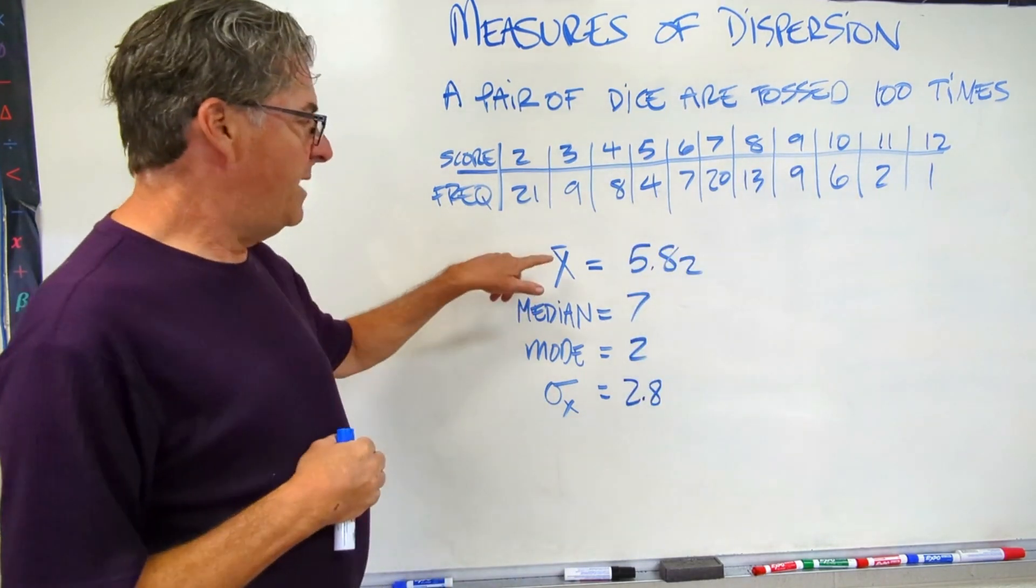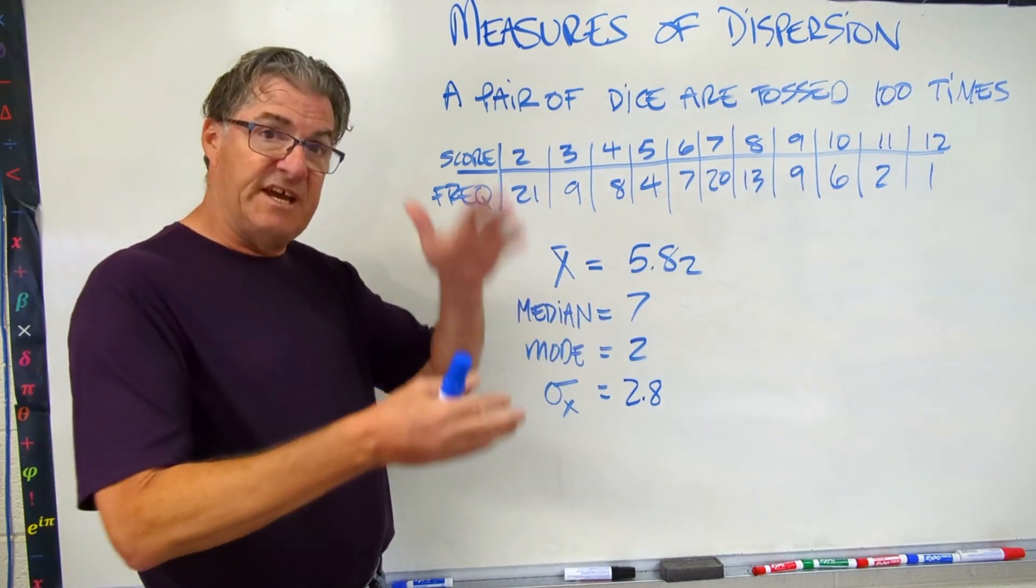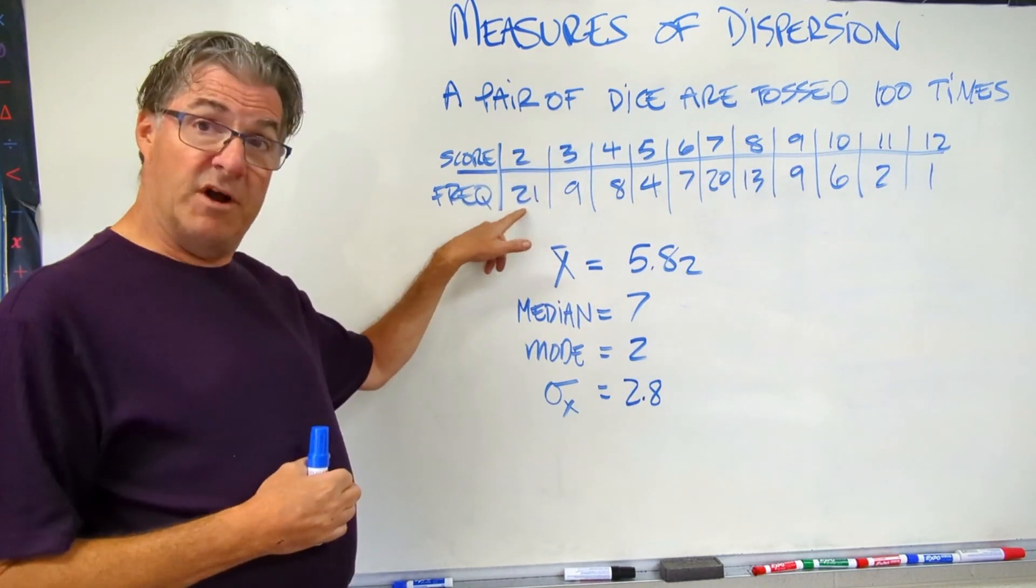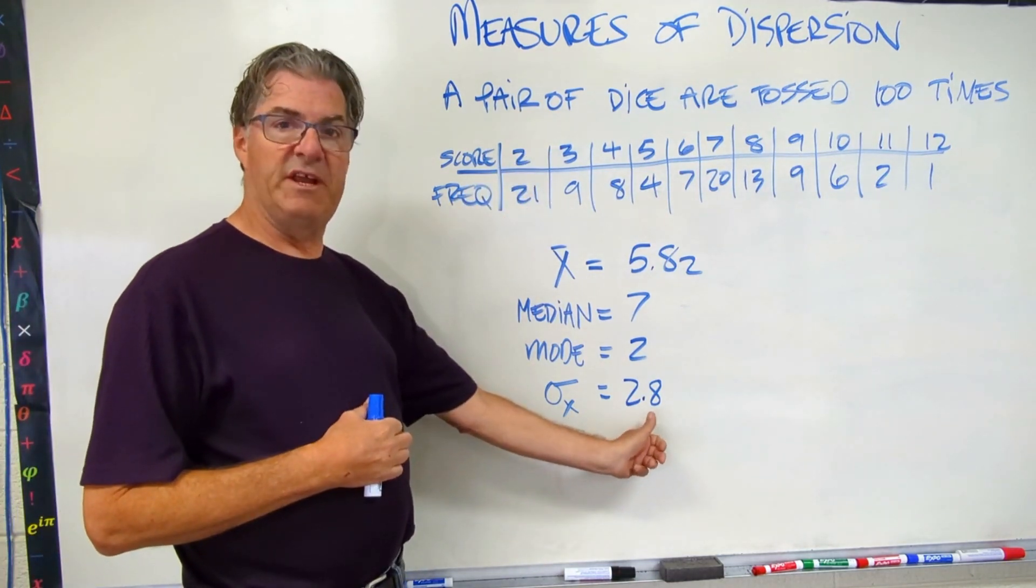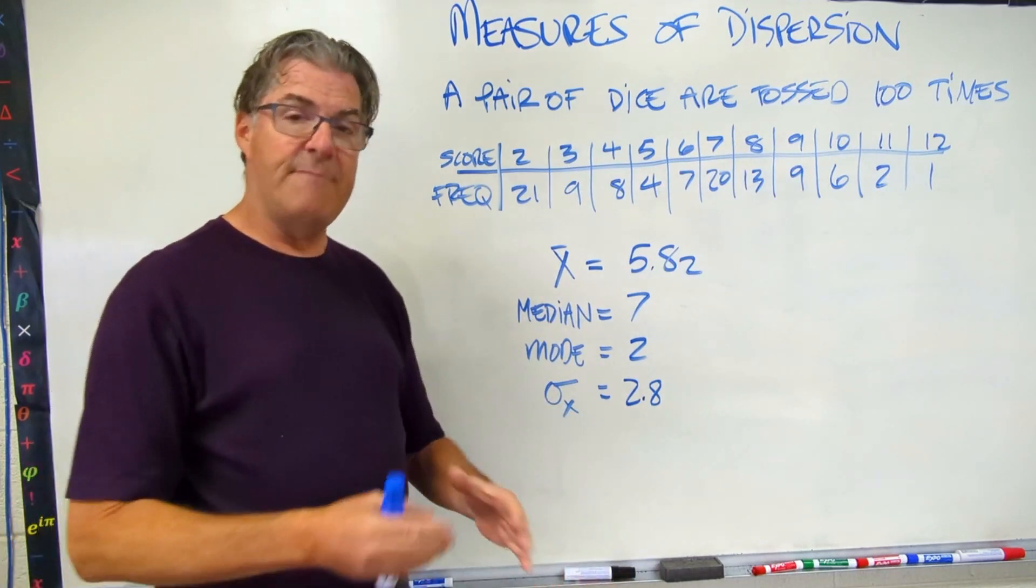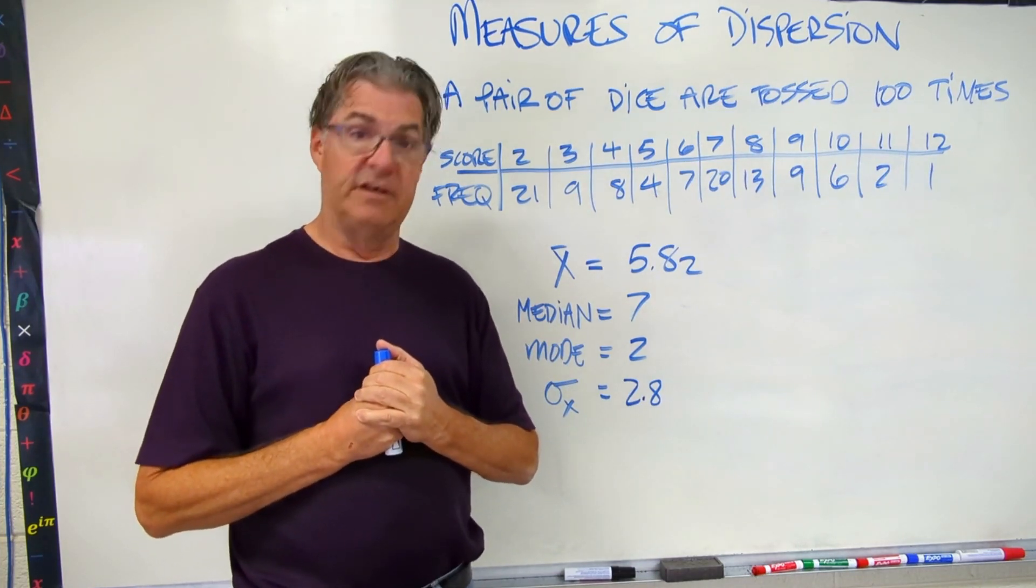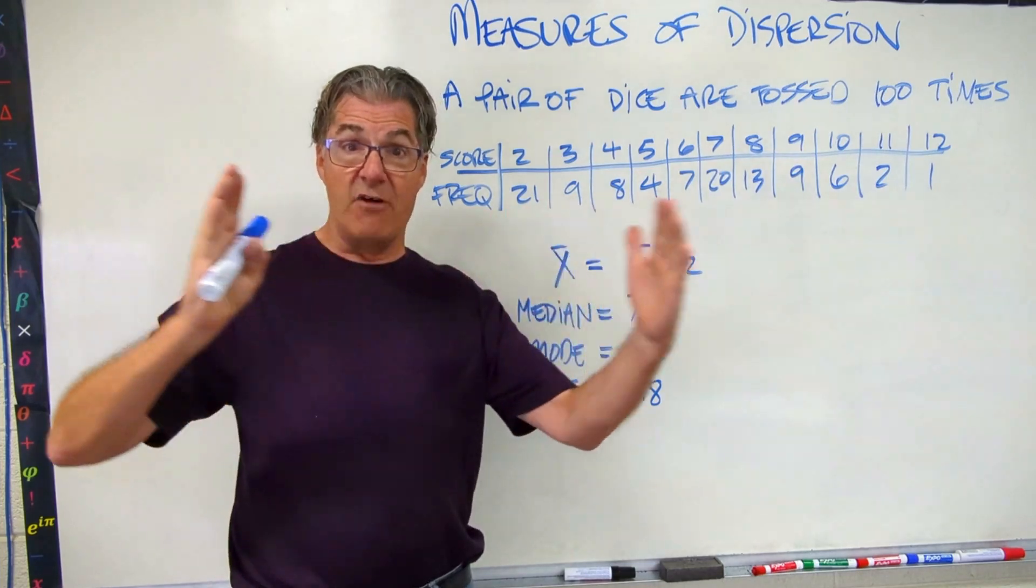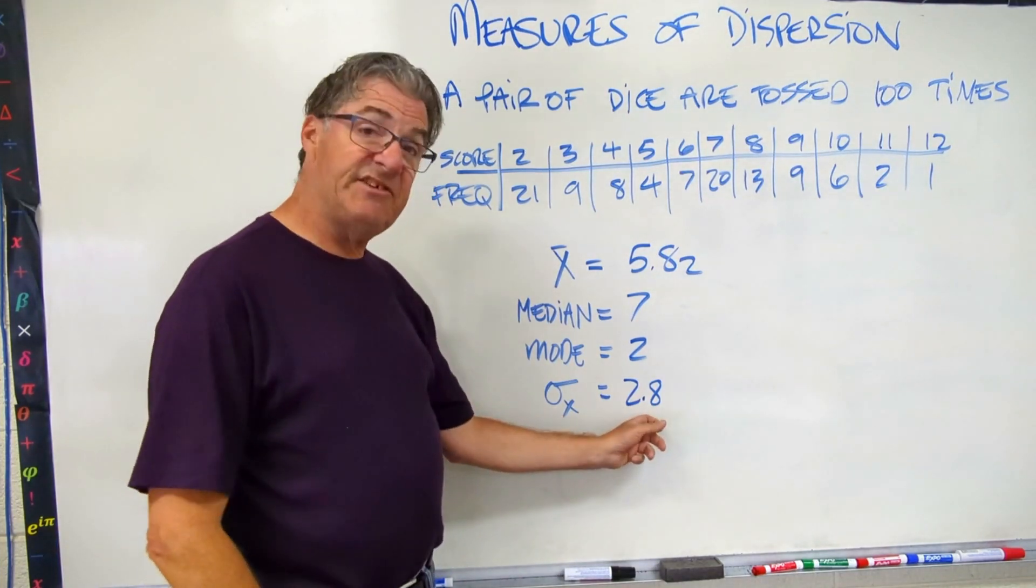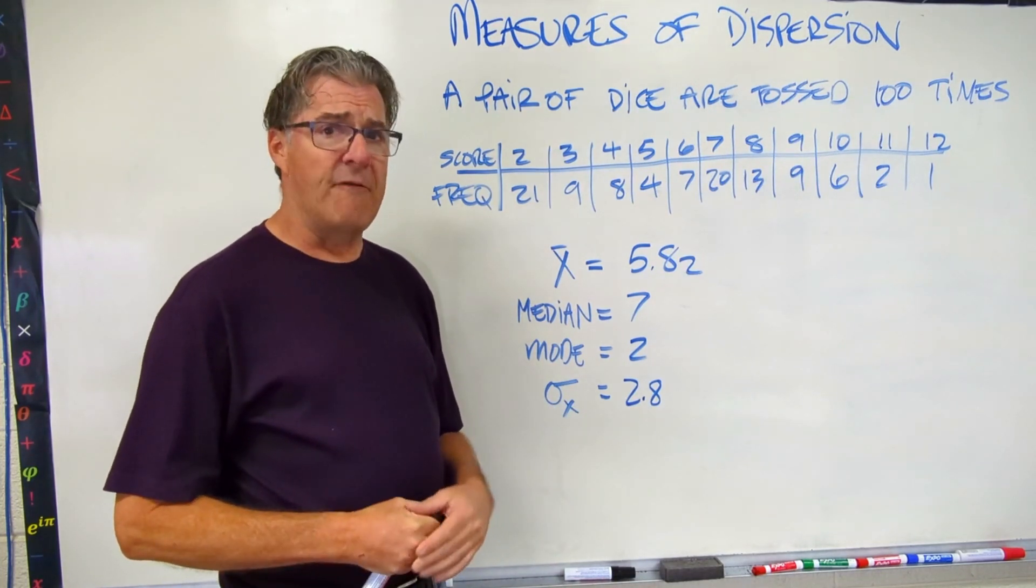Okay. Here's what I get. My mean, my average, is 5.82. My median is 7. That's the value for which half the data is less than and half the data is more. My mode is 2 because we rolled 2 21 times in this trial. And then finally, my standard deviation is 2.8. So first, let's talk about standard deviation. The standard deviation in this one is much, much lower. So what that means is the data is not so spread out. It's more tightly clustered around the mean. So that's how we use standard deviation. The spread outness is how far away from the mean the data can be.